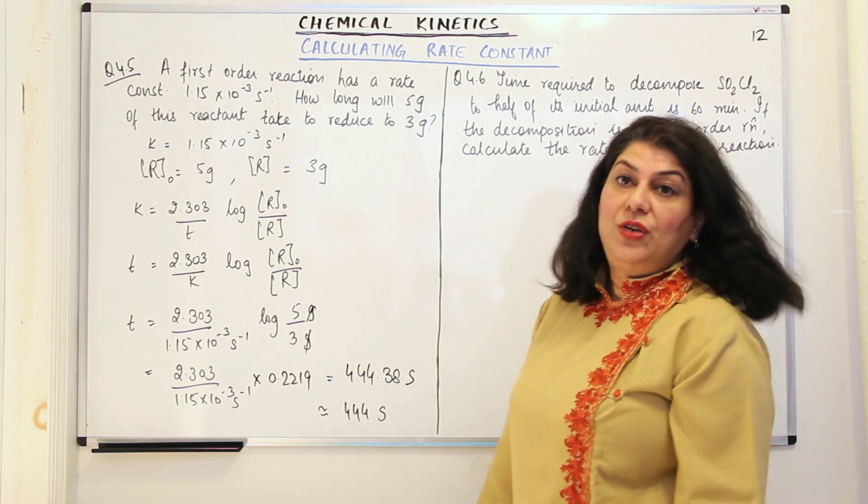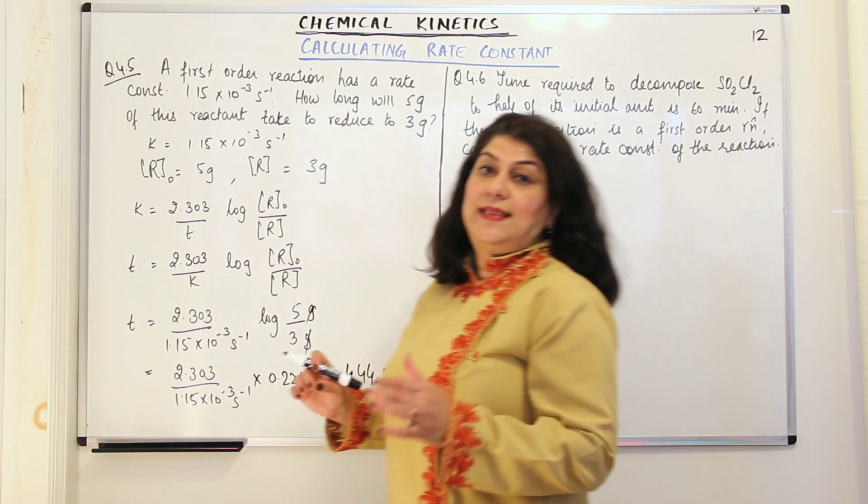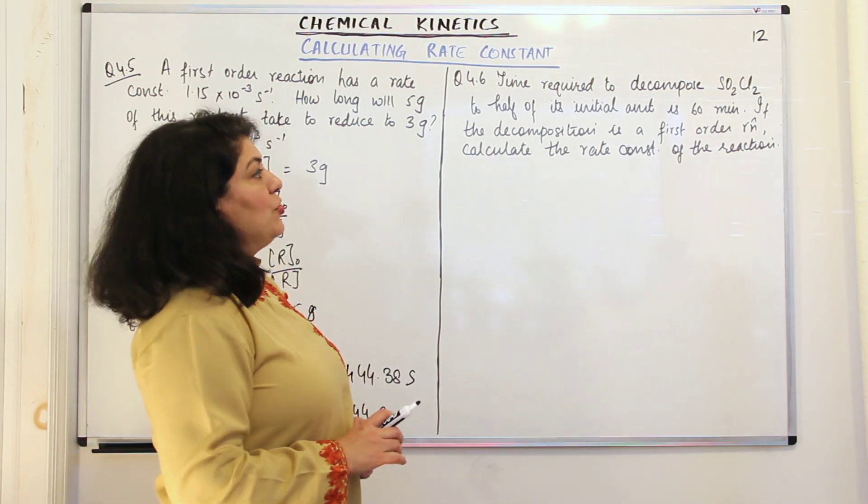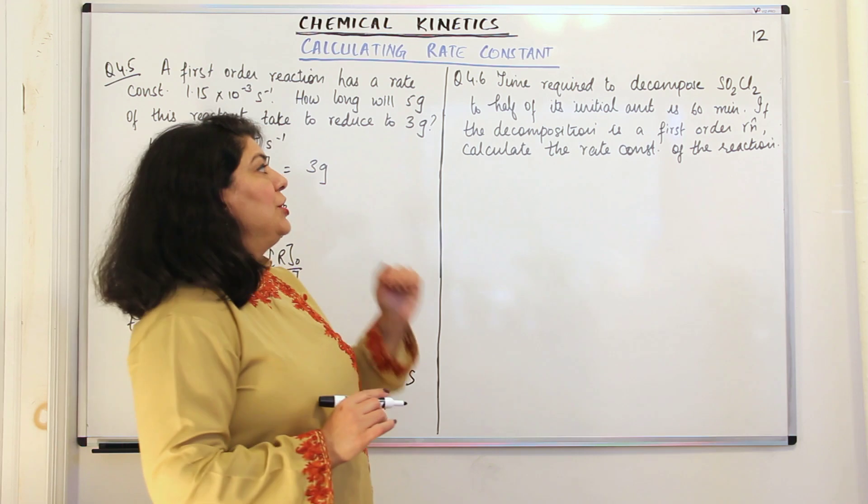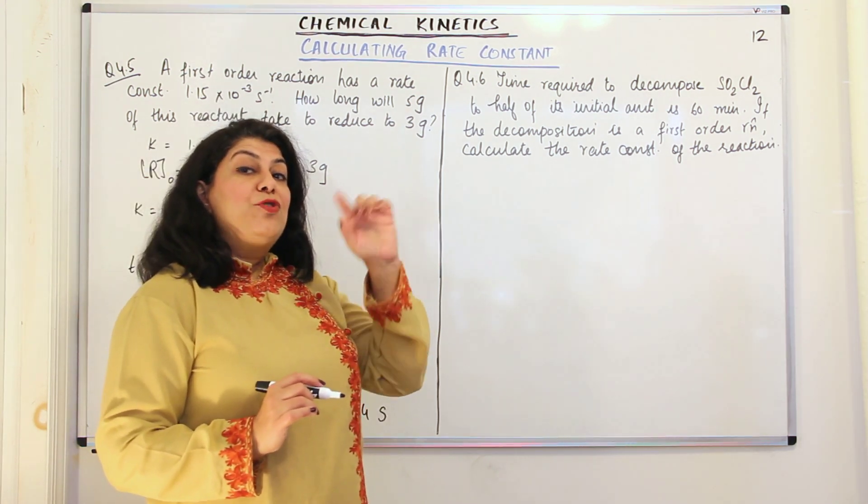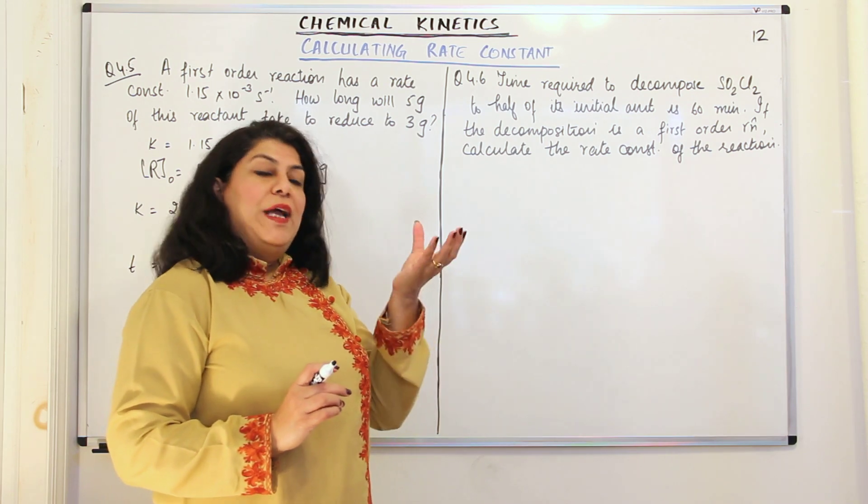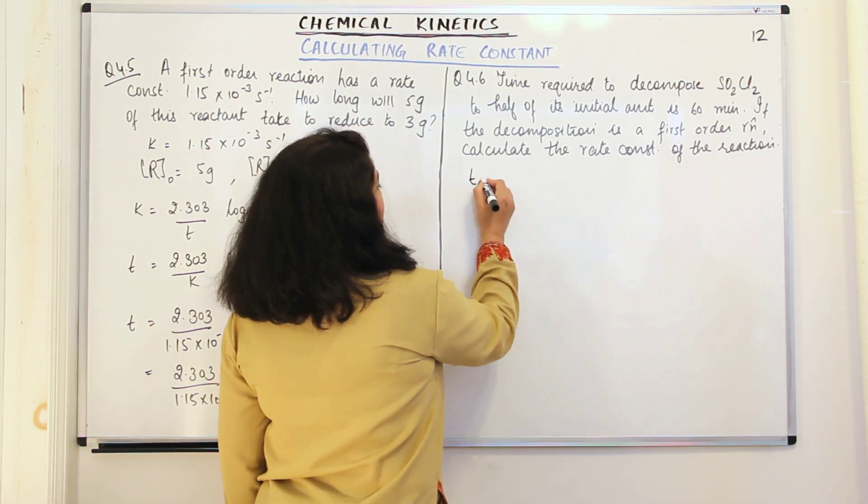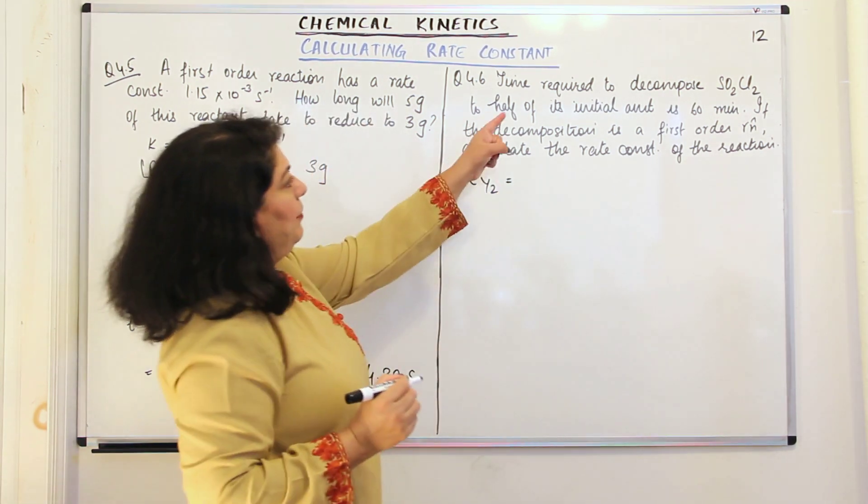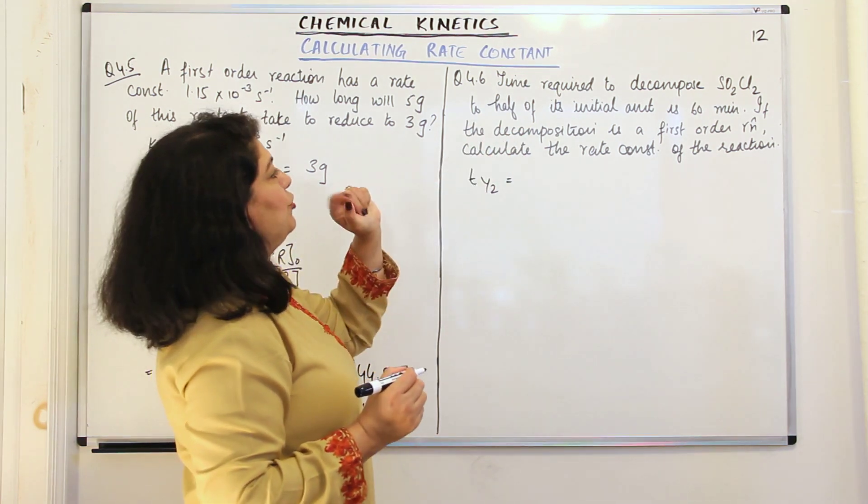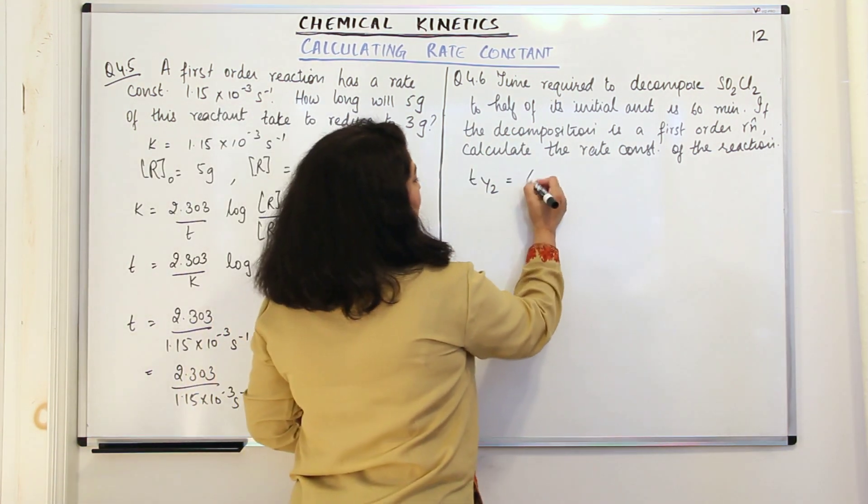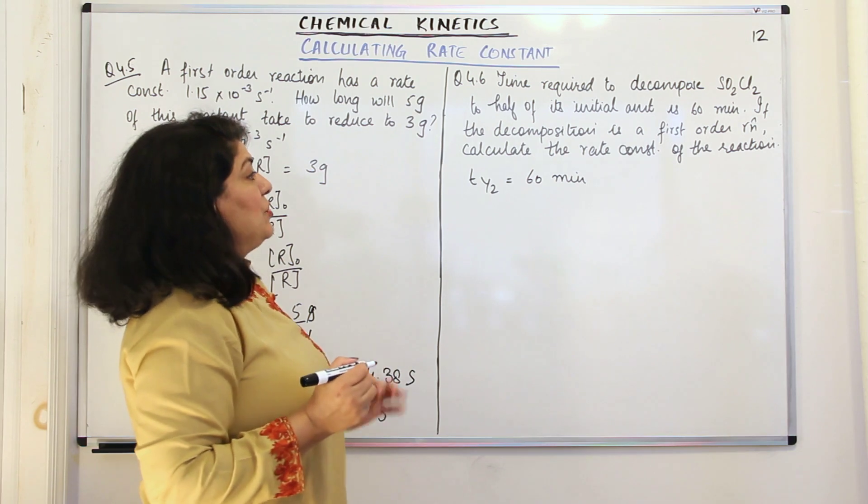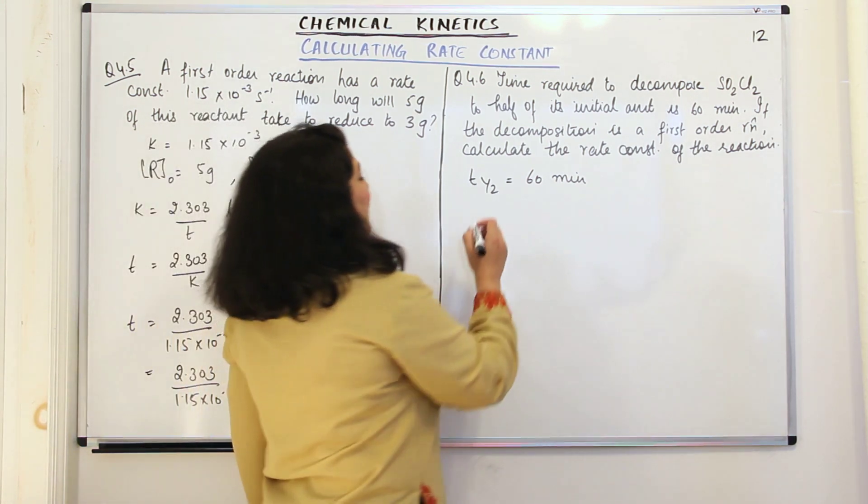That was question 4.5. Let us now come to in-text question 4.6. The question is, the time required to decompose SO2Cl2 to half of its initial amount, which is the half-life period, is 60 minutes. So T half is 60 minutes. If the decomposition is a first order reaction, calculate the rate constant.